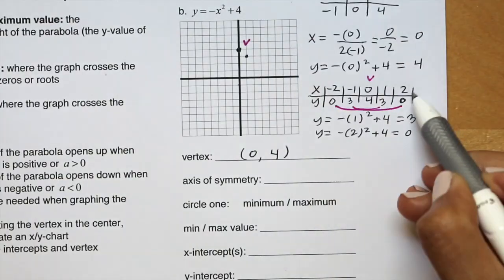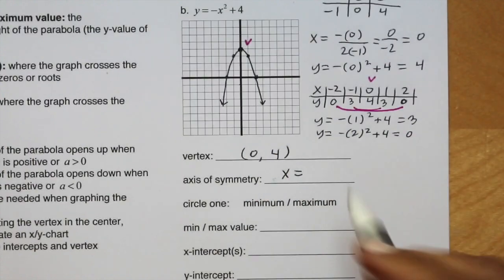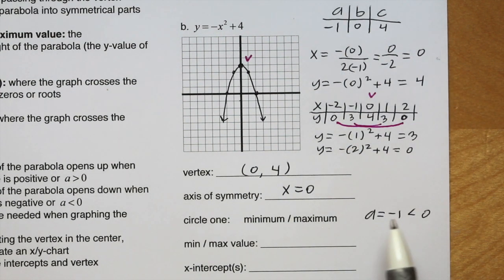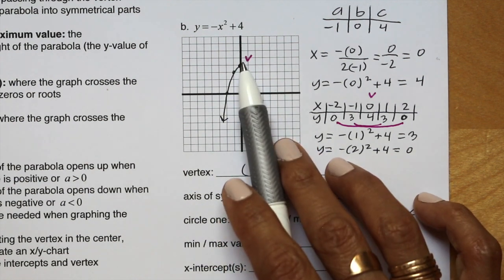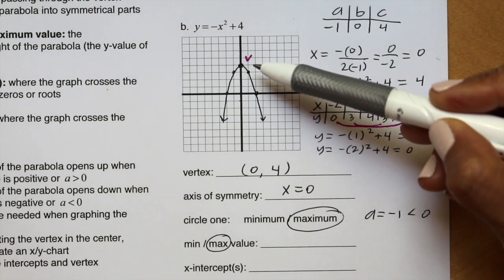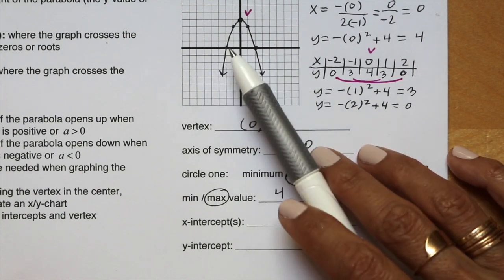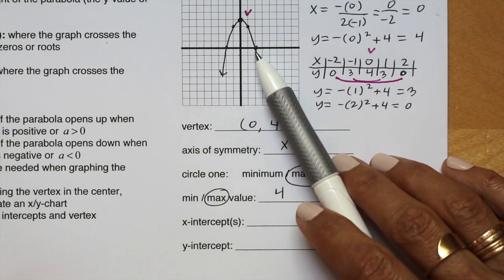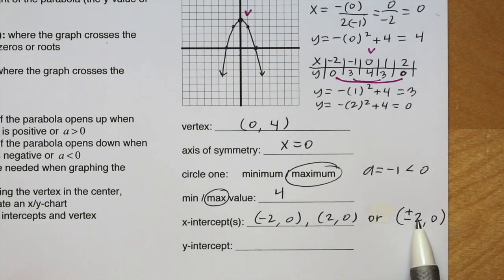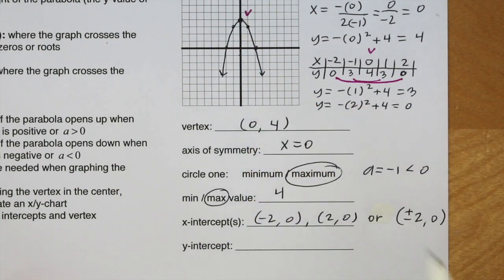There's our parabola. The axis of symmetry is x equals 0. Since a equals negative 1, which is less than 0, the parabola opens down, indicating a maximum. The maximum value is the y-coordinate of the vertex: positive 4. The x-intercepts, where the graph crosses the x-axis, are at negative 2 and positive 2, written as negative 2 comma 0 and positive 2 comma 0, or plus or minus 2 comma 0. The y-intercept is 0, 4.